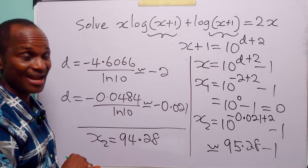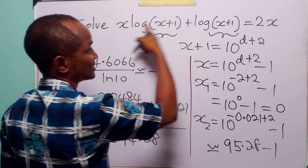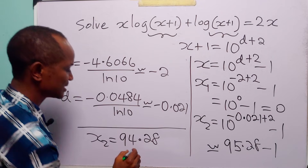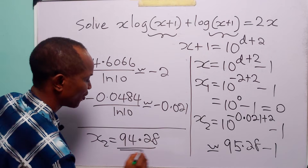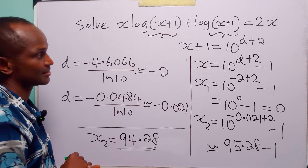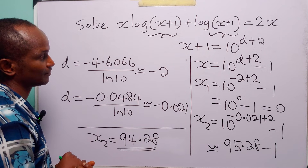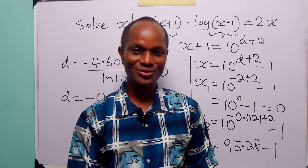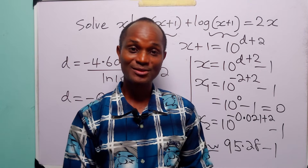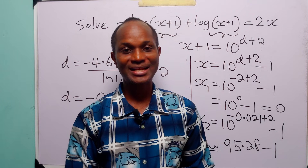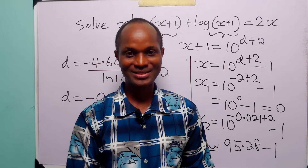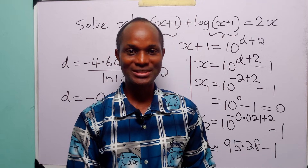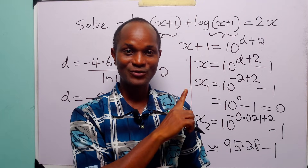So the second value of x that satisfies this logarithmic equation is 94.28. With that, we come to the end of this tutorial. I hope you learned something. If you enjoy such content, please subscribe to the channel and leave a like to support the channel. Thanks for watching, and you can see more videos here.